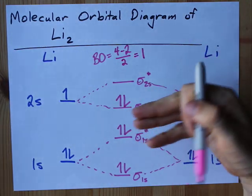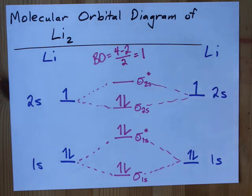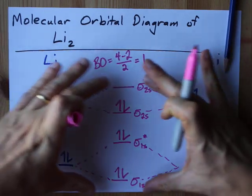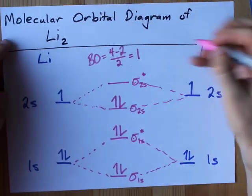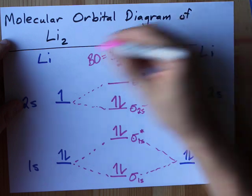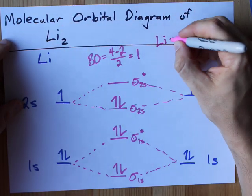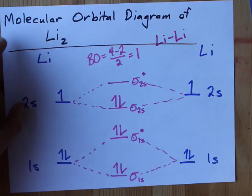And a bond order of one is a single bond, in general. The molecular orbital diagram is just what I've done here. I'm just showing you the bond order there. And the bond order of one implies to me that dilithium, or two lithiums connected to each other, is just Li connected with Li.